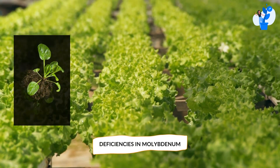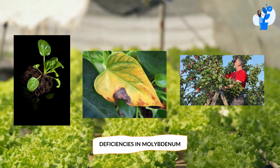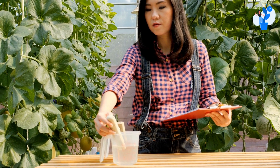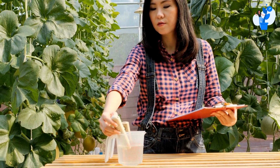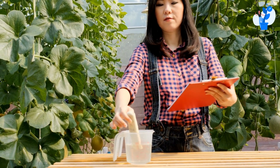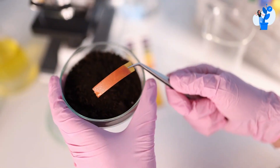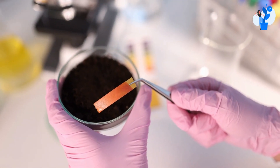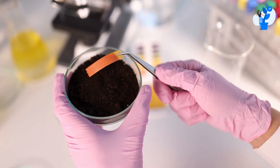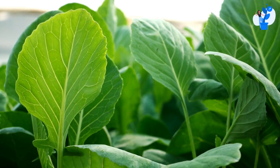Deficiencies in molybdenum can lead to a variety of symptoms, including stunted growth, yellowing of leaves, and reduced fruit and seed production. Molybdenum deficiencies are more common in soils with a high pH level, as molybdenum is less available to plants in alkaline soil. However, molybdenum deficiencies can also occur in soils with high levels of organic matter, as organic matter can bind to molybdenum and make it less available to plants.